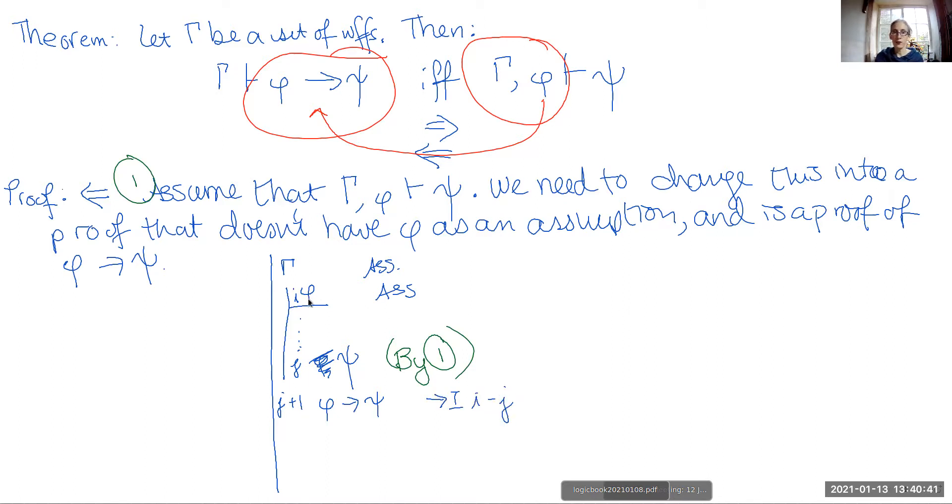We've removed this assumption from our assumption set and said, you've got this conditional instead. And you can do this actually for every single formula in gamma. So let me just give you an example of this. Say that we've got at line one, I'm going to need a different line.